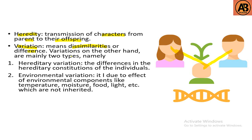Variation means dissimilarities or differences. Variations are mainly of two types: hereditary variation and environmental variation. Hereditary variation refers to differences in the hereditary constitution of individuals. Environmental variation is due to the effect of environmental components like temperature, moisture, food, and light, and these are not inherited.